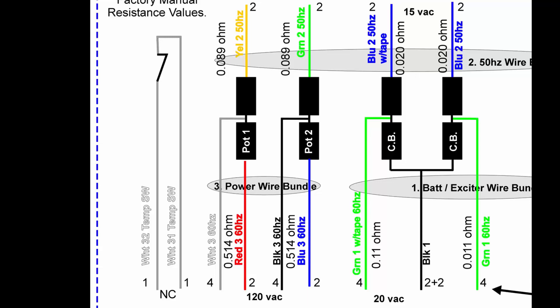So you can parallel these phases, you can put them in series to have a split phase 220. You can parallel them to get twice the current at 120, or you can just simply tie them in series so that they end up being 240 without a split phase.